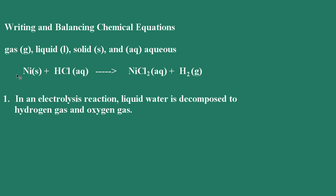Before we start, we have this equation here. We have solid nickel reacting with hydrochloric acid to produce aqueous nickel chloride and hydrogen gas. Notice these labels in parentheses — that tells us the phase of the reactant or the product. For a gas, we'll always see a lowercase g in parentheses; a liquid, a lowercase l; a solid, a lowercase s; and for aqueous, aq in parentheses. Aqueous means that the substance is dissolved in water, so aqueous nickel chloride means that nickel chloride salt is dissolved in water.